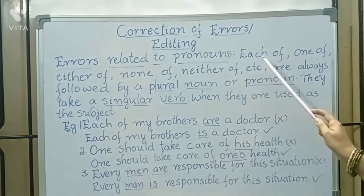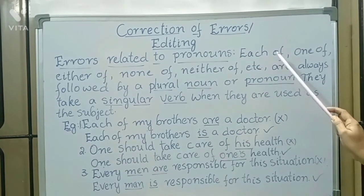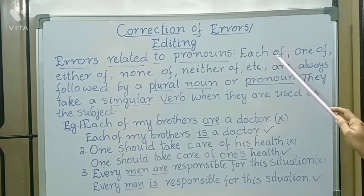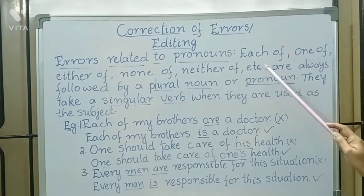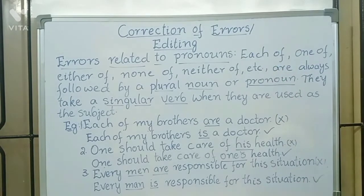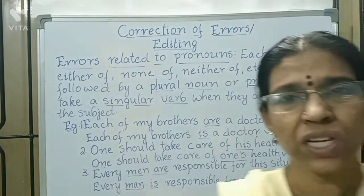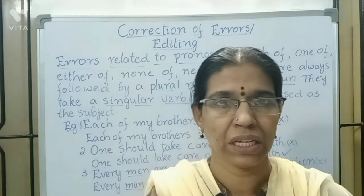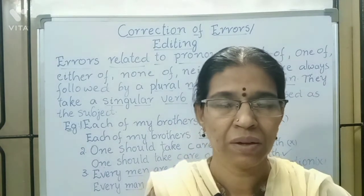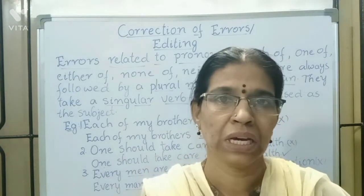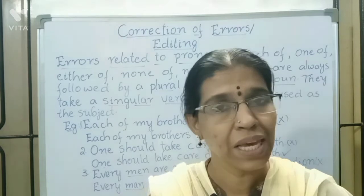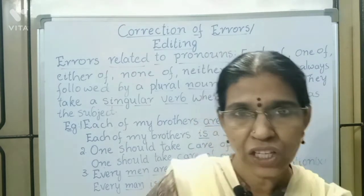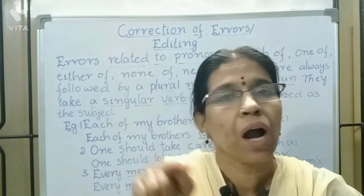See, after 'each of', a plural noun or pronoun will come. Just imagine: each and every one, either and every one, neither and every one. But we are saying about only one thing. For example: each of the books — we have to read each book. One of the books.